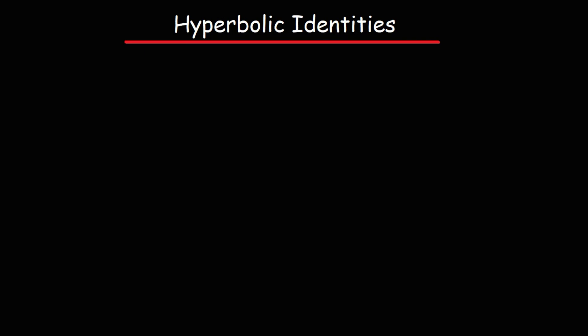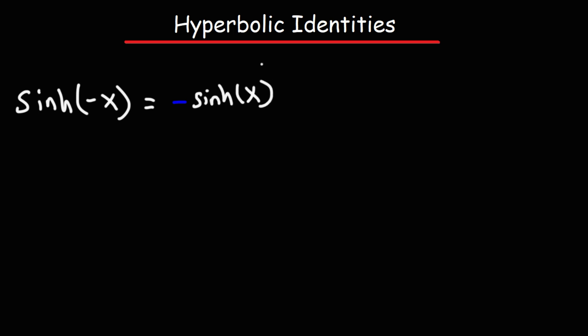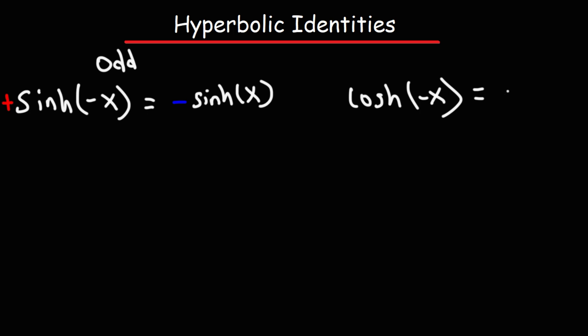In this video, we're going to go over common identities that you want to be familiar with in regards to hyperbolic functions. Let's start with the even-odd identities. Hyperbolic sine of negative x is equal to negative hyperbolic sine of x, so the hyperbolic sine function is an odd function. Notice that the sign changed from positive to negative as we inserted a negative x. As for hyperbolic cosine, this is an even function: hyperbolic cosine of negative x equals positive hyperbolic cosine of x.